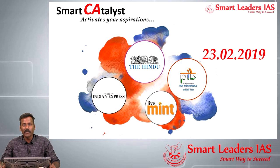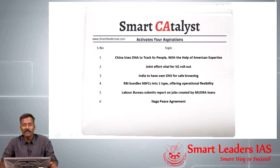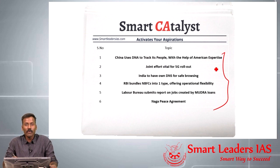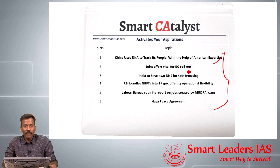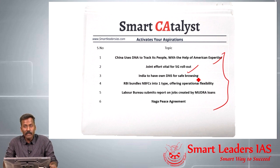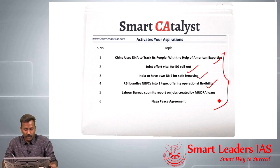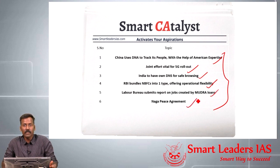Hi all, welcome to Small Catalyst, 23rd February 2019. Today we will be discussing these six topics: surveillance of Uighur Muslims by the Chinese government; the joint effort to initiate 5G rollout in India; India's proposal of a new domain name server for safe browsing; an RBI action of bundling all NBFCs into a single category; inclusion of mudra loanees into the employment sector; and the conclusion of the Naga peace agreement.